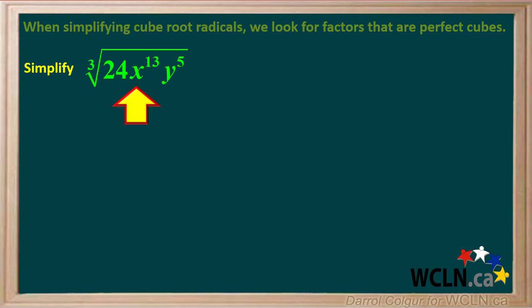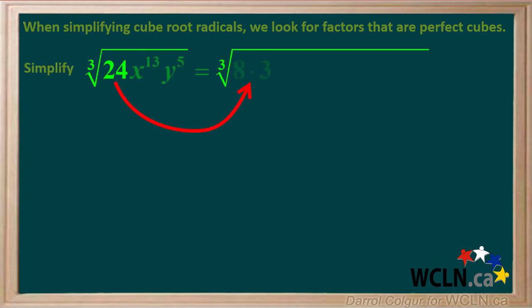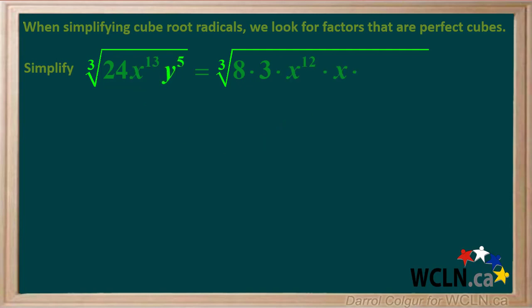We'll do an example. We're asked to simplify the cube root of 24x to the 13th y to the 5th. 24 can be broken down to the perfect cube 8 times 3. x to the 13th can be broken down to the perfect cube x to the 12th times x, and y to the 5th can be broken down to the perfect cube y to the 3rd times y squared.